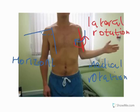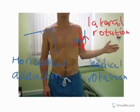This might be relevant to, for example, throwing a hook punch in boxing. If the arm then goes back out into that position, we call that horizontal abduction. So, horizontal adduction is hooking towards the midline of the body, and horizontal abduction is back outwards.